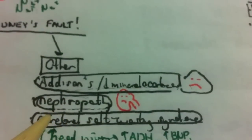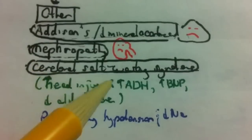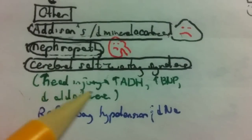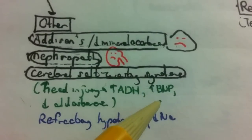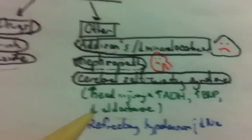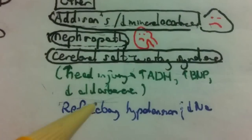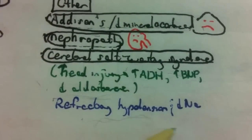Other causes include Addison's disease — same mechanism as ACE inhibitors, low aldosterone and low mineralocorticoids from an unhappy adrenal gland — nephropathies, and cerebral salt wasting syndrome. Cerebral salt wasting is poorly understood: a head injury causes increased ADH, increased BNP, and decreased aldosterone, resulting in the kidney spilling salt. It also presents with refractory hypotension and low sodium, making it difficult to treat.